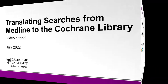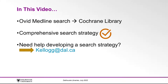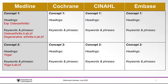In this video, we will cover how to take a search strategy created in Ovid Medline and translate it into the Cochrane Library. This video assumes you have already developed a comprehensive search strategy in Medline, so if you need help getting your search started, you can contact a librarian at kellogg.dal.ca. When translating your search, it's important to have a table with all of your databases included so you can record your translated terms in one place, so be sure to set that up in advance. Once you have created your table, you can begin working on translating your search.